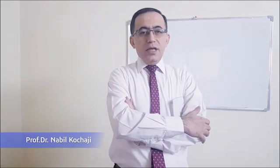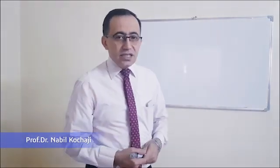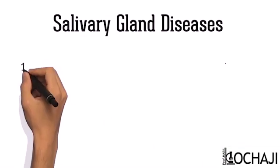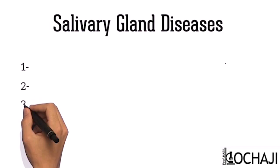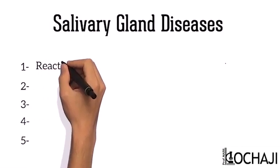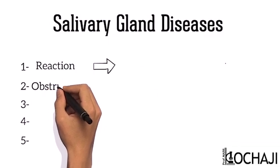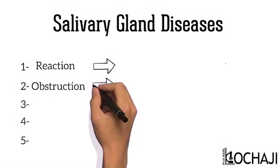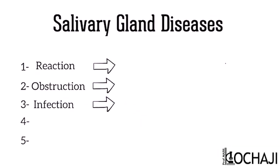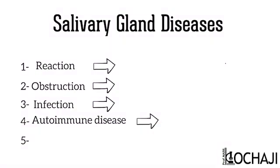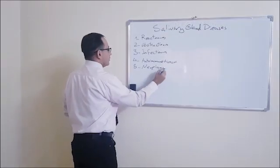Hello, this is Nabil Koushaji. Our lesson today is about Salivary Gland Diseases. You are going to study four of five salivary gland diseases. The first one is the reaction, with one example for it. The other one is obstruction with one example, then infection, and the fourth one is the autoimmune disease. For neoplasms, that's another lecture.